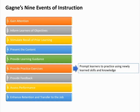Event 6 — Provide Practice Exercises: At this stage, you need to ensure that your people can demonstrate their knowledge of what you've taught them. The learner is required to practice the new skill or behavior. Eliciting performance provides an opportunity for learners to confirm their correct understanding, and the repetition further increases the likelihood of retention. You can provide learners with simulations, games, quizzes, and practice exercises.